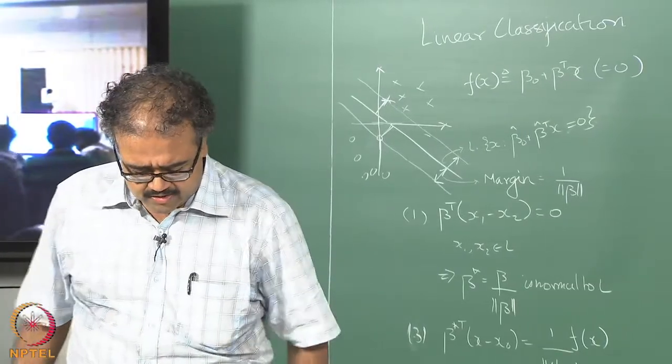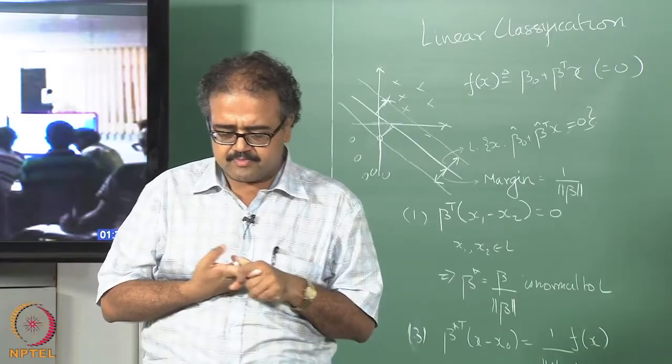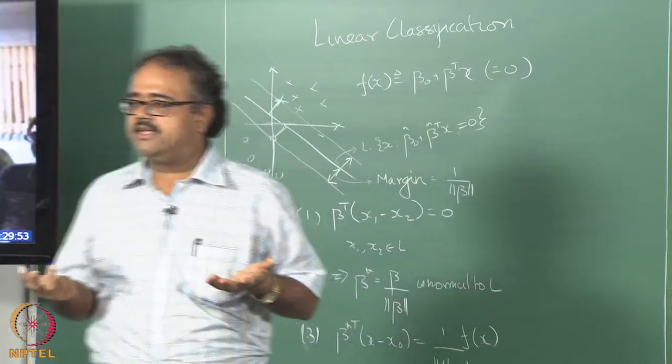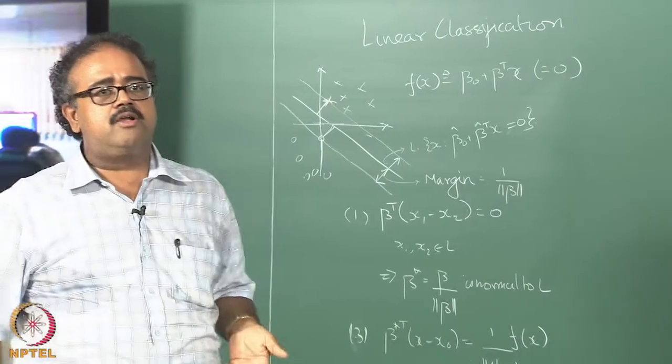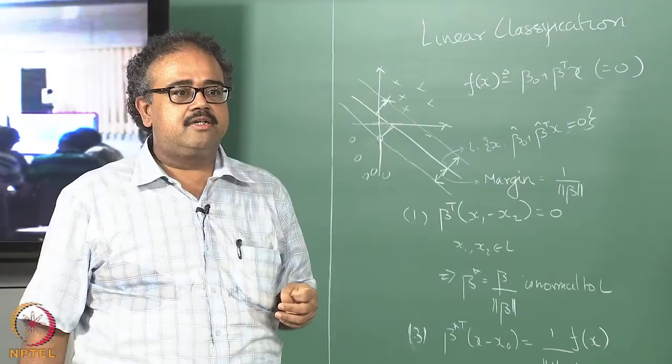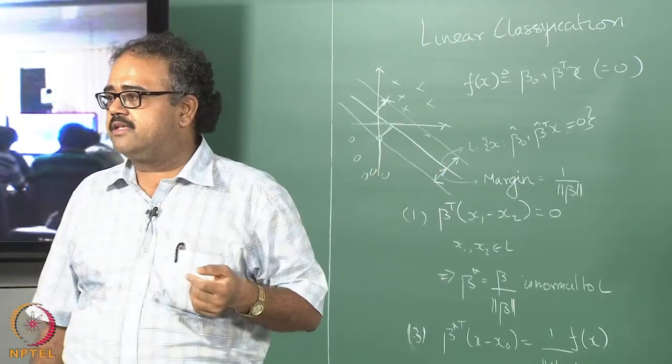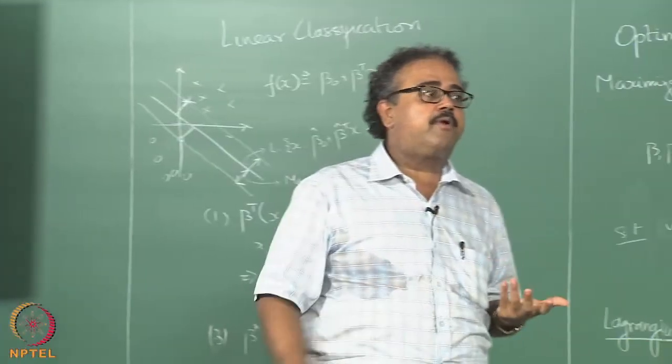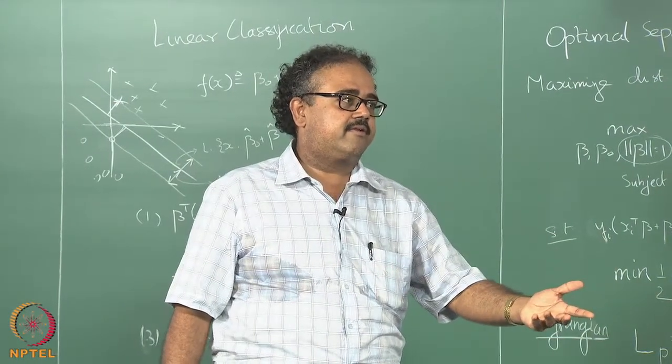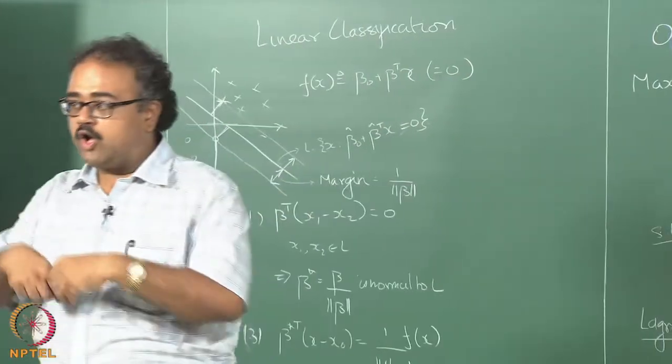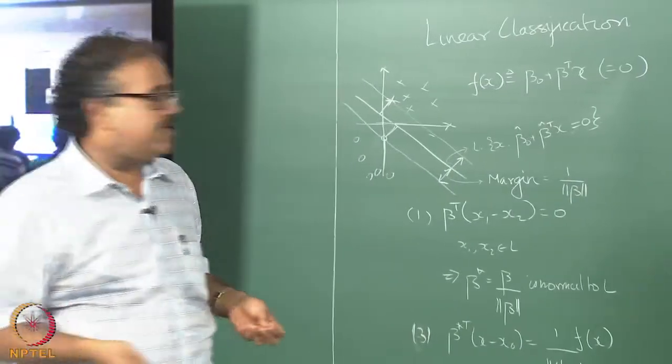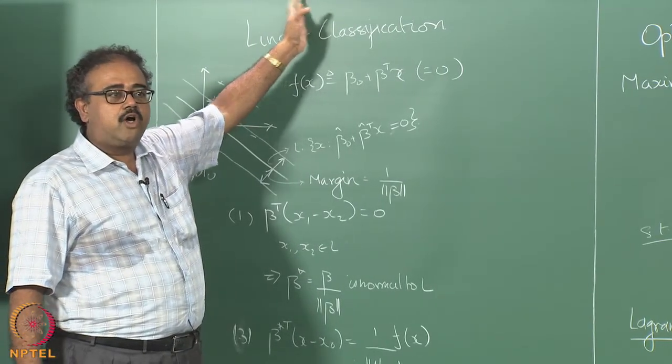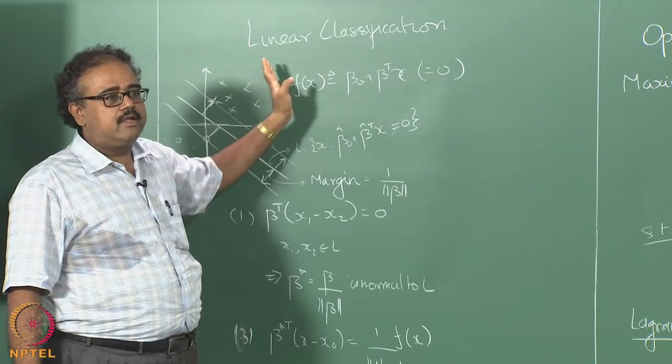Before we move on, I wanted to point out something. If you think about how LDA works - LDA tries to do a density estimation eventually. If you think about it, you make some assumptions about the probability distribution, the form of the probability distribution. It is Gaussian with equal covariance across all the classes. That essentially means that every data point in your training set is going to contribute towards the parameters you are estimating. The betas you will estimate there will depend on all the data points given to you, whether they are close to the hyperplane or very far away - all the data points will determine your class boundary.